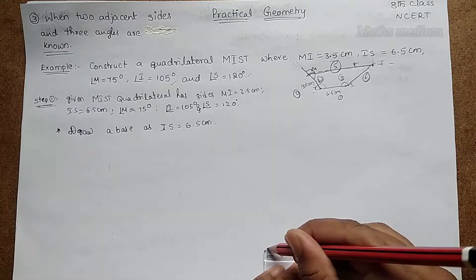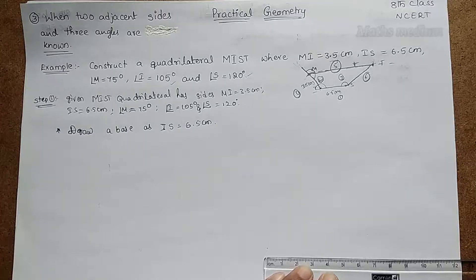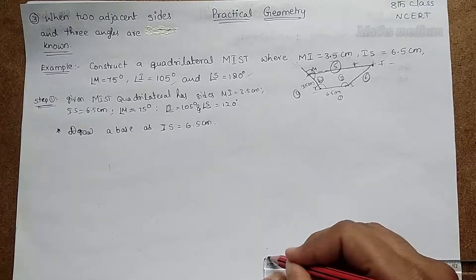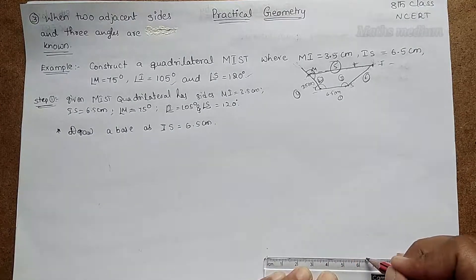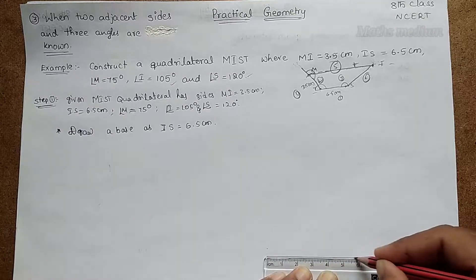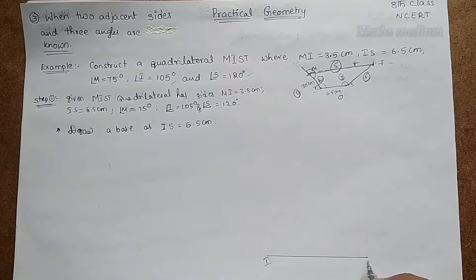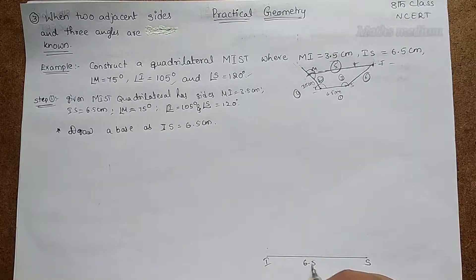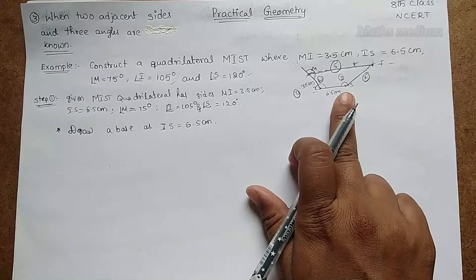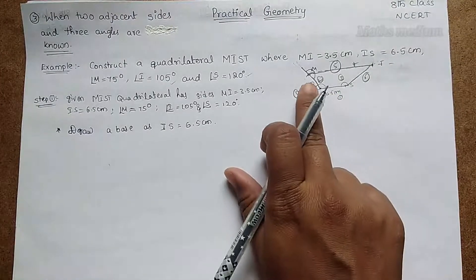Mark zero on one end and 6.5 on the other end — put a point and connect these two points. Label them I and S. IS equals 6.5 centimeters. Step 1 is complete. Next, coming to Step 2, we have to construct an angle.